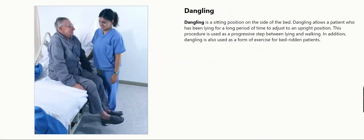Dangling is a sitting position on the side of the bed. Dangling allows a patient who has been lying for a long period of time to adjust to an upright position. This procedure is used as a progressive step between lying and walking. In addition, dangling is also used as a form of exercise for bedridden patients.